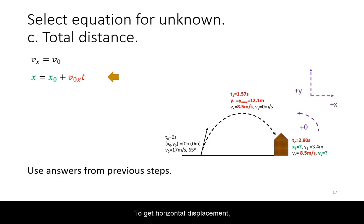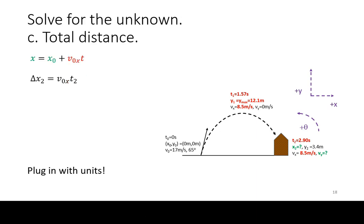To get horizontal displacement, keep in mind that the horizontal velocity is constant throughout. We only need to insert the total time in the air.